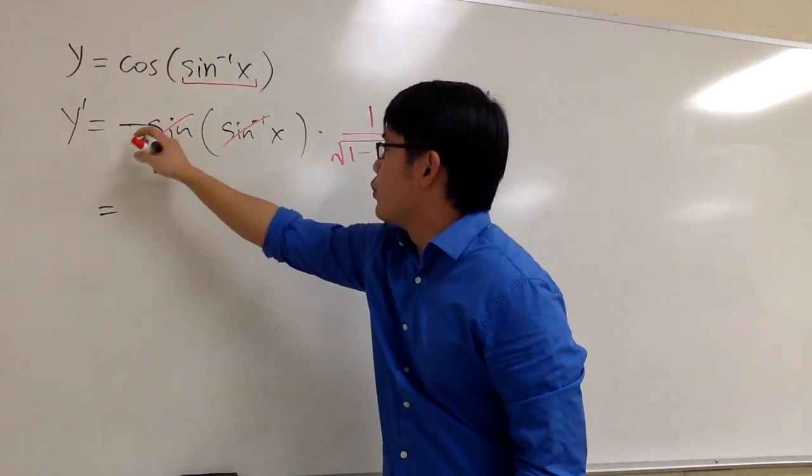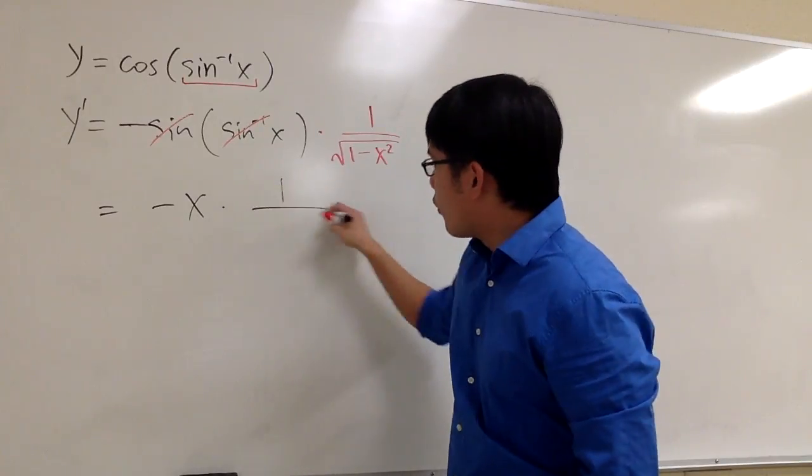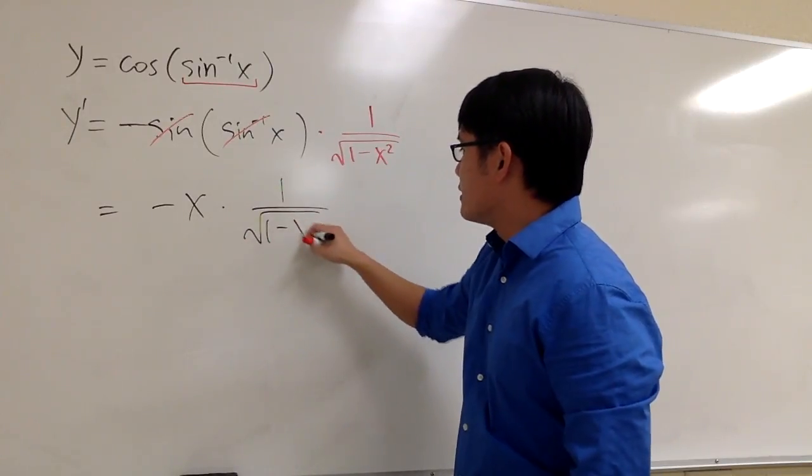So for the first part, we will have negative x, that's all, times the second part is 1 over square root of 1 minus x squared.